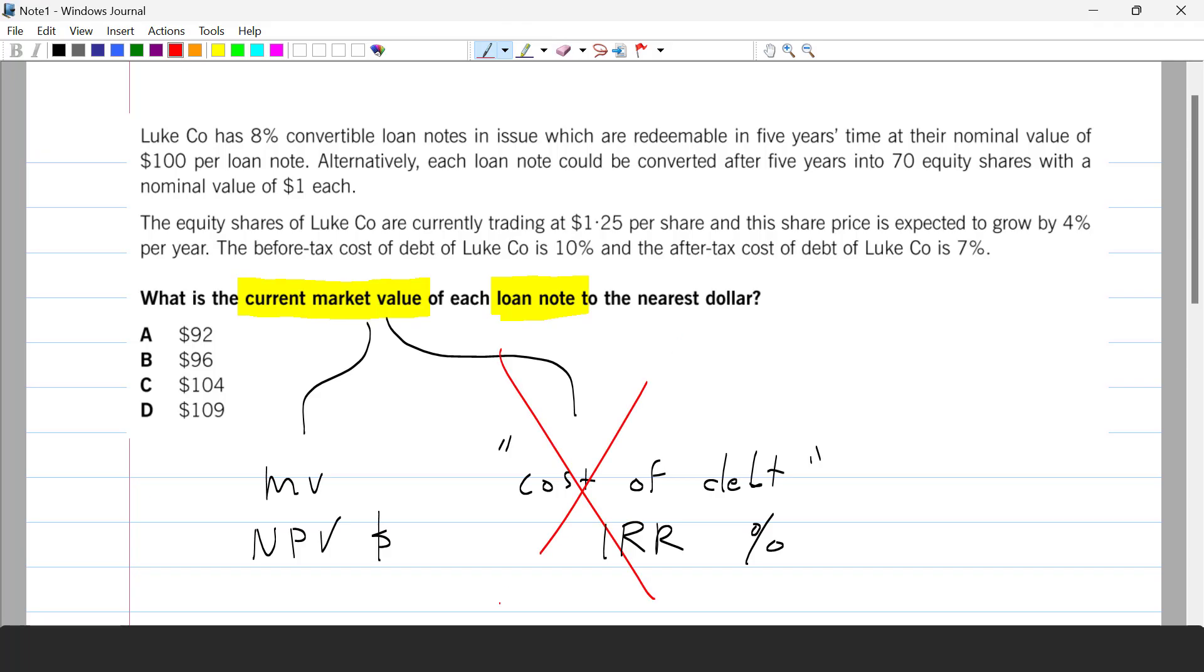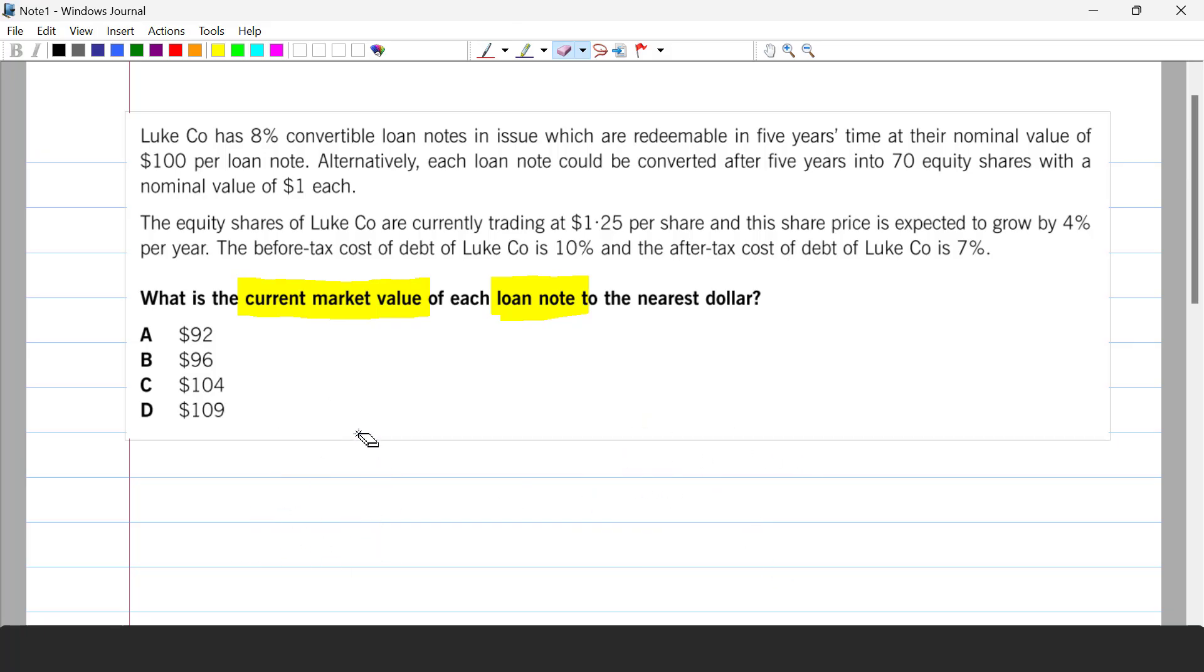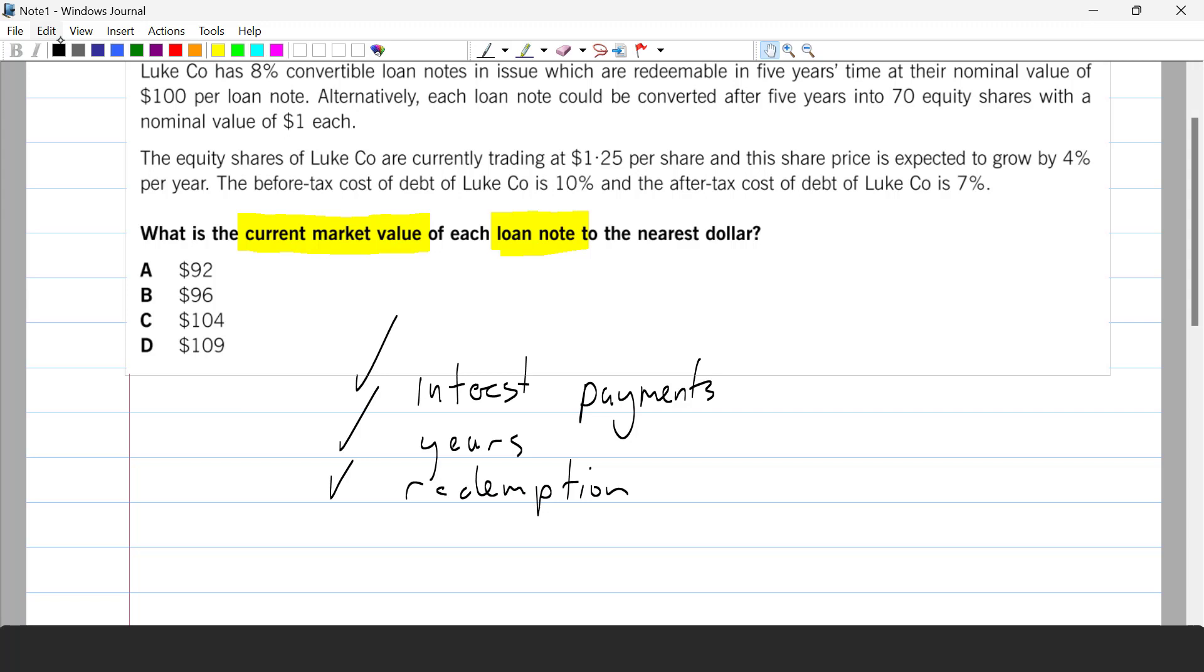Now that we know we're going for the market value and that we need the NPV, we can make a quick shopping list. In scratch paper we need some interest payments which will be the annual cash flows. That's the first thing we need. We need the number of years, the time to maturity, and then we need a redemption value. What's that payment at the end of the number of years? So this is what we need. Let's now dig around in the question and see what is there.